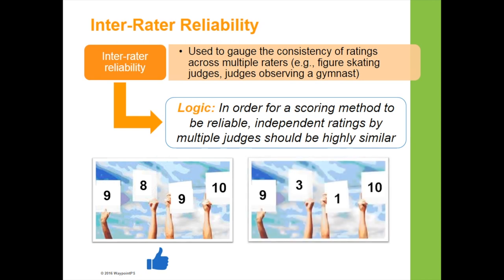In the second example, four judges gave scores of 9, 3, 1, and 10. This is highly inconsistent across the judges — they're not on the same page regarding what to look for, what elements should score high or low. They're all over the place. This is an example where we would expect to find low inter-rater reliability.